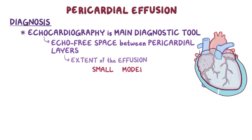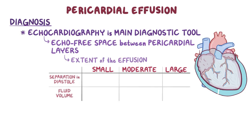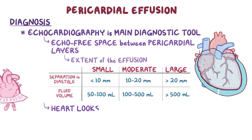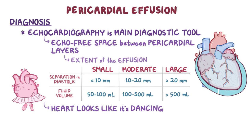The effusion can be small, moderate, or large. For circumferential pericardial effusions, less than 10 millimeters of pericardial separation in diastole is small and corresponds to a fluid volume of 50 to 100 milliliters; 10 to 20 millimeters of separation is moderate and corresponds to 100 to 500 milliliters; and greater than 20 millimeters separation is large and corresponds to greater than 500 milliliters. Additionally, on an echocardiogram, a pericardial effusion makes the heart look like it's dancing within the pericardium. In case of cardiac tamponade, echocardiography often shows collapsed ventricles.